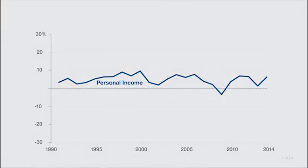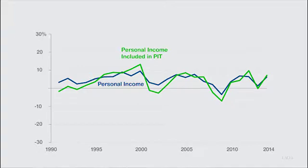Here's personal income by itself. The state doesn't tax some components of personal income such as social security. When you take these out, the taxable pieces are a bit more volatile.